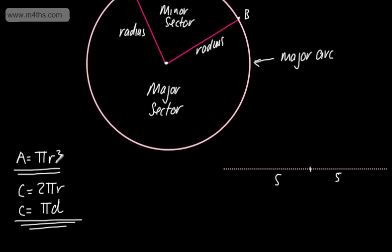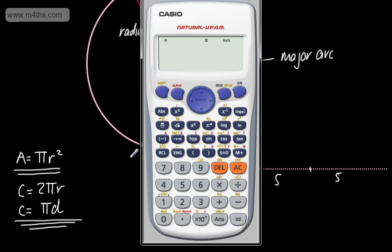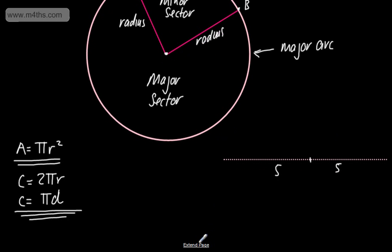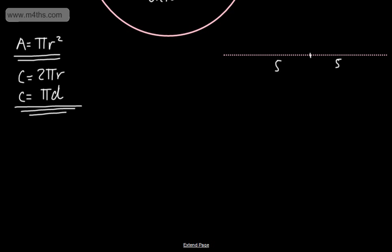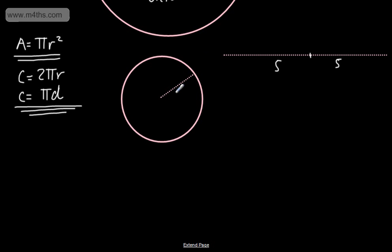The area is πr². We take pi, which is 3.142, and multiply it by the radius squared. As a brief bit of revision, let's find the area and circumference of a circle. If the radius is 5 centimetres and we want to find the area, that's going to be pi multiplied by 5 squared — that's 25 times by pi, which is 25π. In the calculator, 25 × π gives us 78.5 centimetres squared, correct to one decimal place.